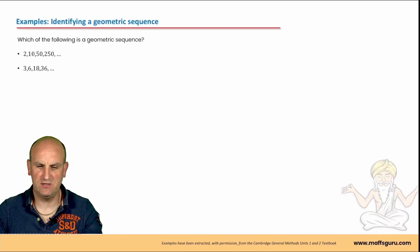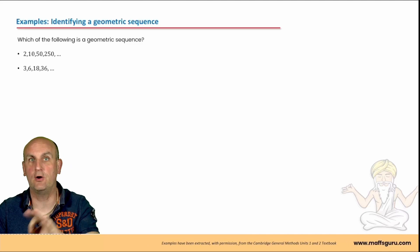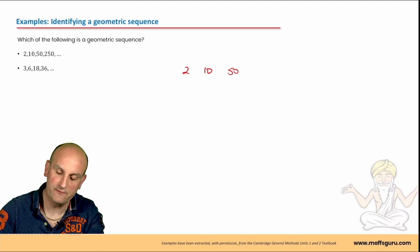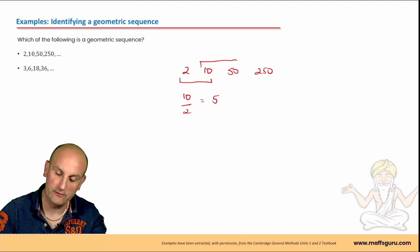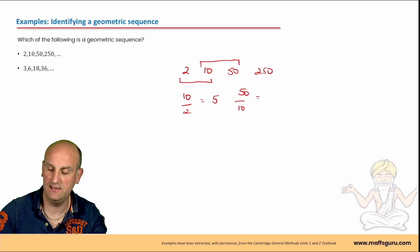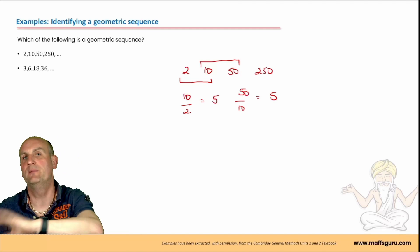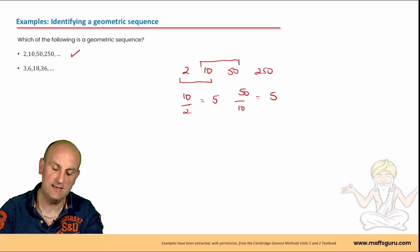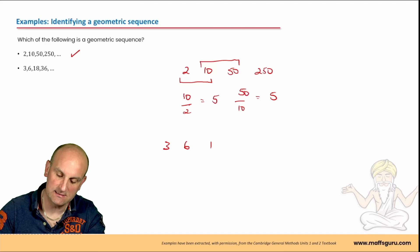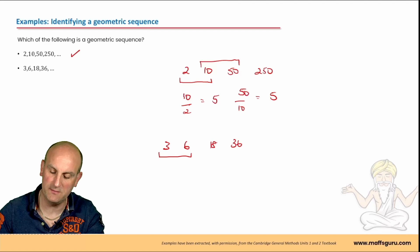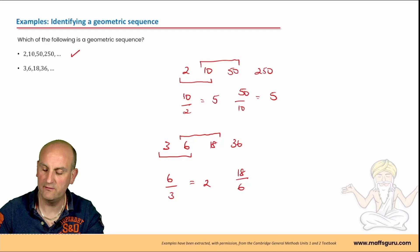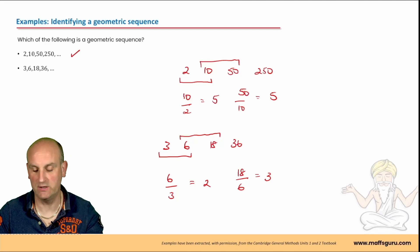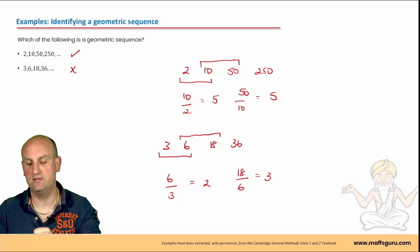Identifying a geometric sequence: for it to be geometric the common ratio must be exactly the same throughout. Sequence 2, 10, 50, 250: 10 divided by 2 is 5; 50 divided by 10 is also 5; 250 divided by 50 is also 5. This is a geometric sequence. Now 3, 6, 18, 36: 6 divided by 3 is 2, but 18 divided by 6 is 3. Those aren't the same, so that is not a geometric sequence.